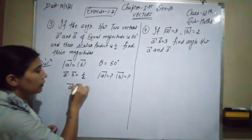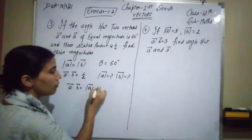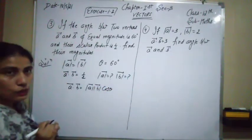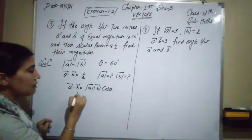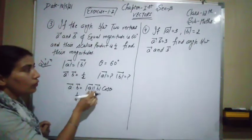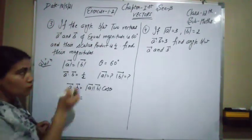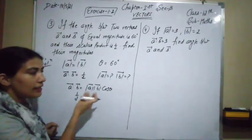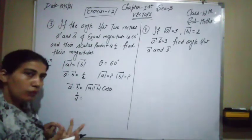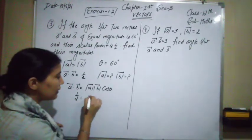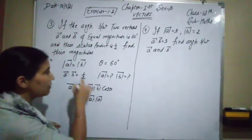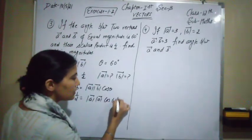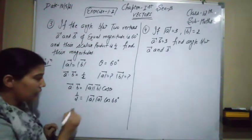Since |a⃗| = |b⃗|, we write: 1/2 = |a⃗|² × cos 60°. cos 60° = 1/2, so this becomes 1/2 = |a⃗|² × (1/2). Multiplying both sides by 2 gives |a⃗|² = 1.